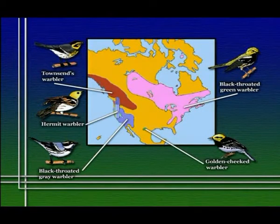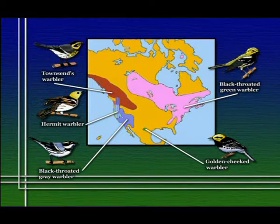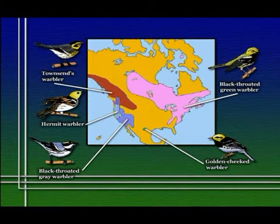The other four species in this complex are the Townsend's warbler, the hermit warbler, the black-throated gray warbler, and the golden-cheeked warbler. These species all have relatively non-overlapping distributions in the western part of the continental United States. The question is: why do we have these five species occurring where they are, with one very broadly distributed species in the east and four closely related species with more separated distributions in the west? One possible answer comes from looking at the periodic advance and retreat of glaciers during the Pleistocene era, about two million years ago.